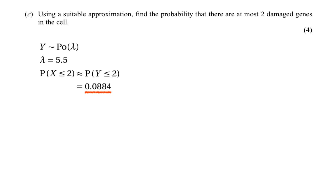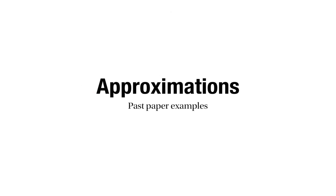A word of caution: in this question a normal approximation also appears valid, since np equals 5.5 which is greater than 5, and n times (1 minus p) is huge. But you must remember never to make a normal approximation to a binomial distribution if a Poisson approximation is also valid, because the Poisson approximation is easier to do and gives a more accurate answer. You should only make a normal approximation to a binomial if you've tried the Poisson approximation and it doesn't work — because lambda ends up too large to use the probability tables. I hope you found this video on approximations and past paper questions useful in your revision. Thank you very much for watching.